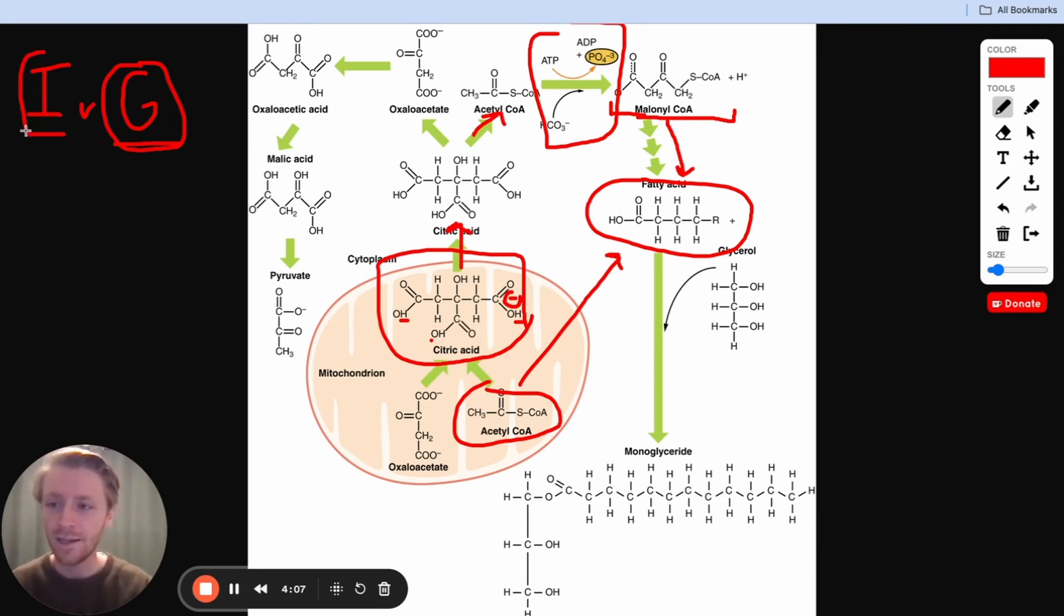So insulin, as you might imagine, insulin is what's going to tell our body like, hey, let's get some more fatty acids built. Glucagon is going to be the opposite. It's going to decrease the fatty acid synthesis that's going on. It's going to inhibit it.